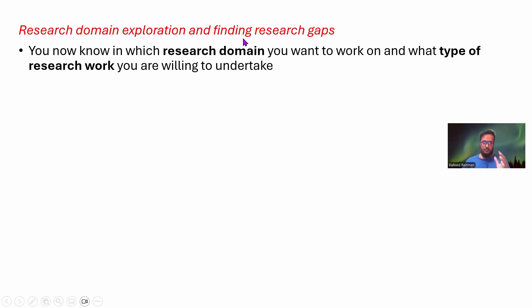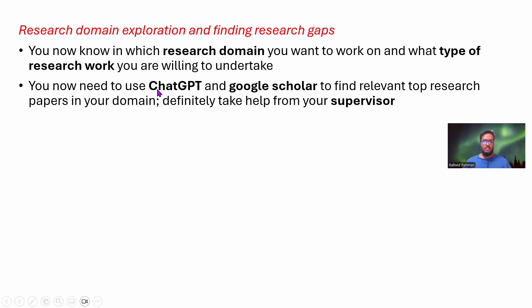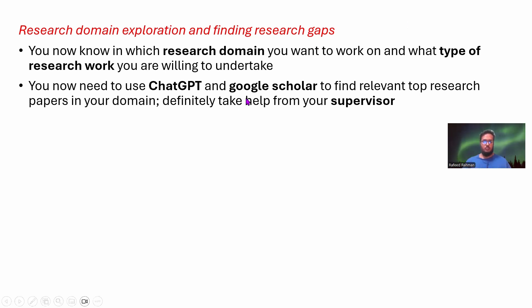After selecting your research type, the next phase is to explore your research domain and find research gaps. At this point you know which research domain you want to work on and what type of research you're willing to undertake. You need to use ChatGPT and Google Scholar — Google Scholar is a great place to search for different papers and research works in your domain.